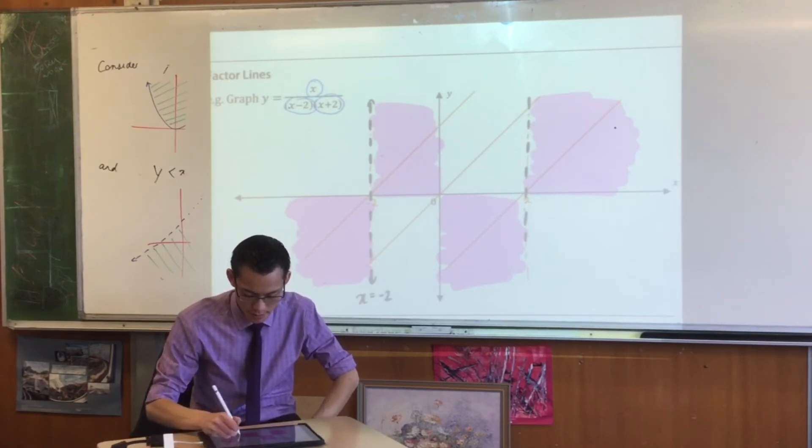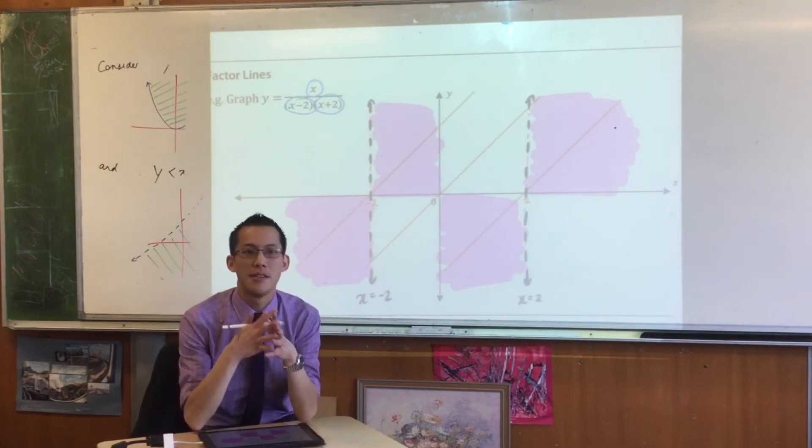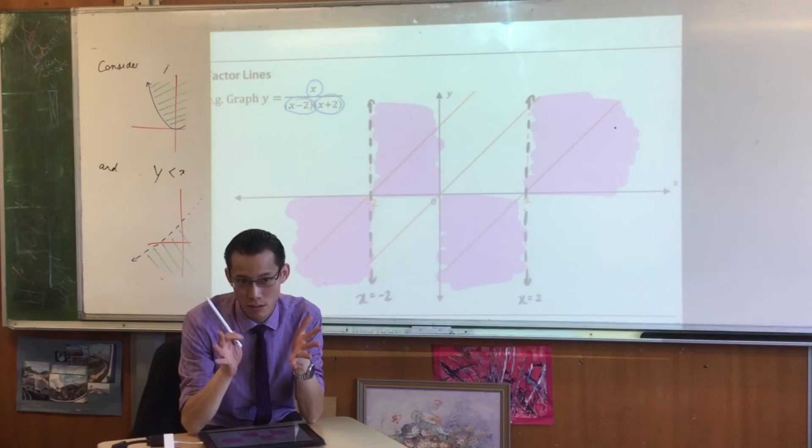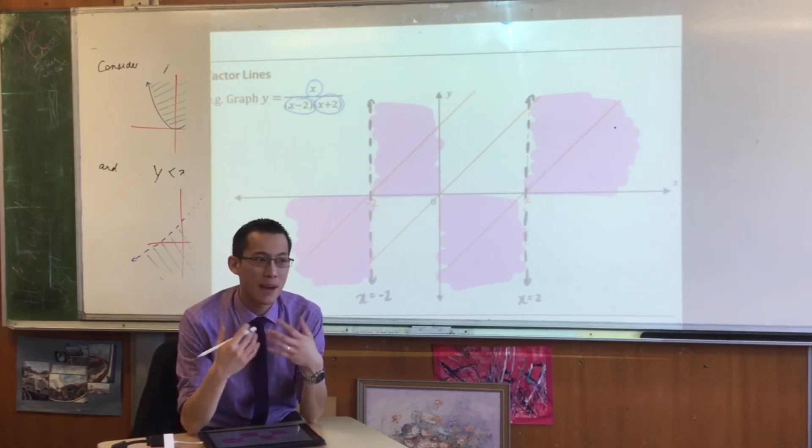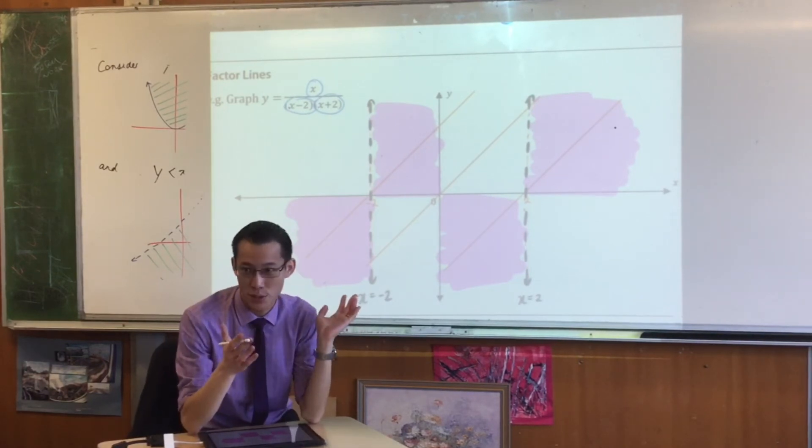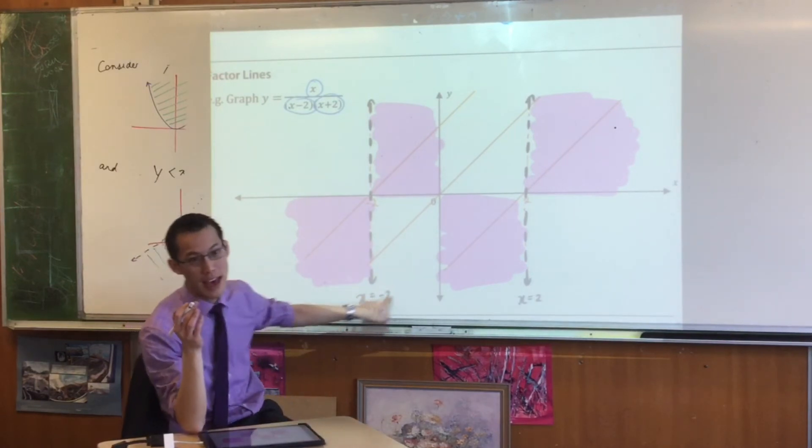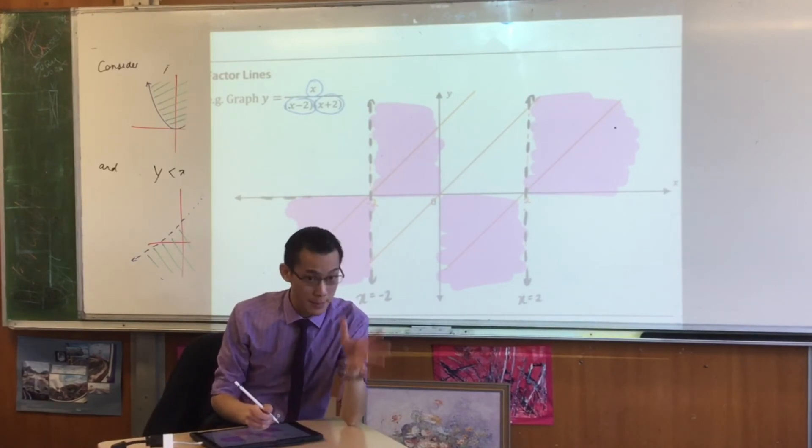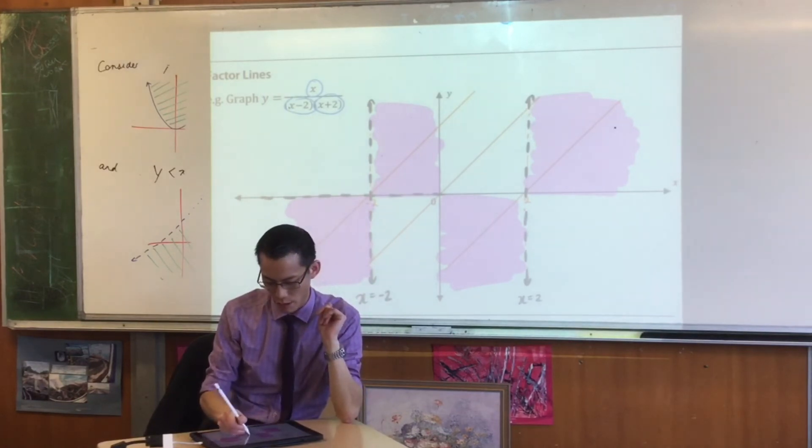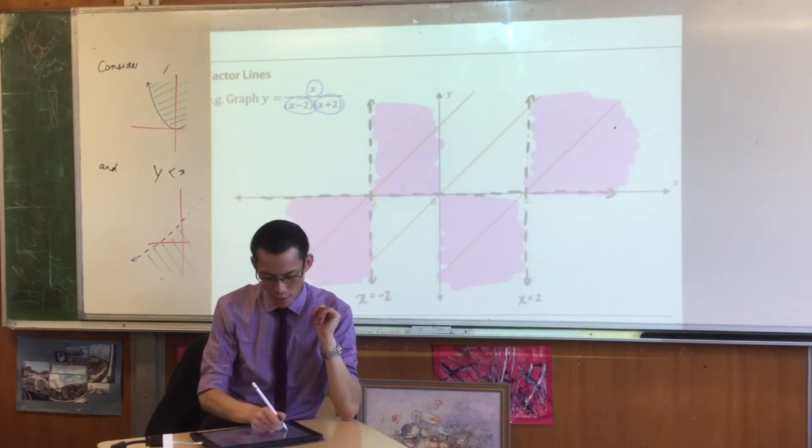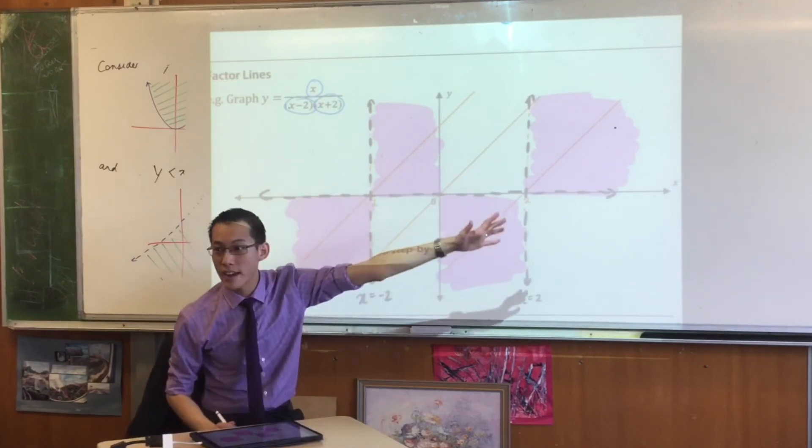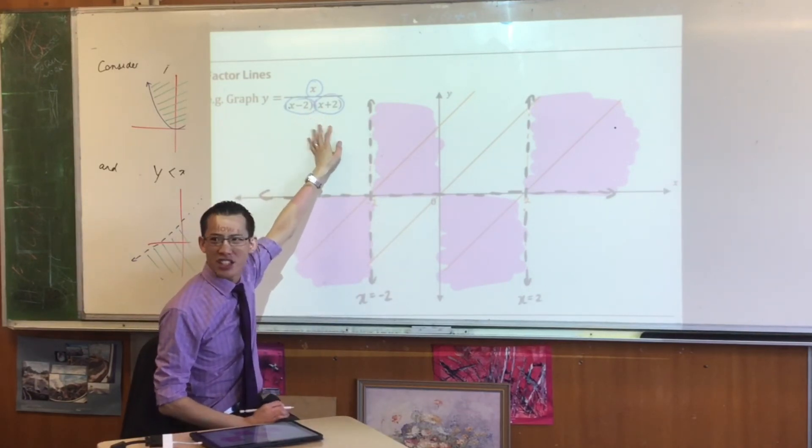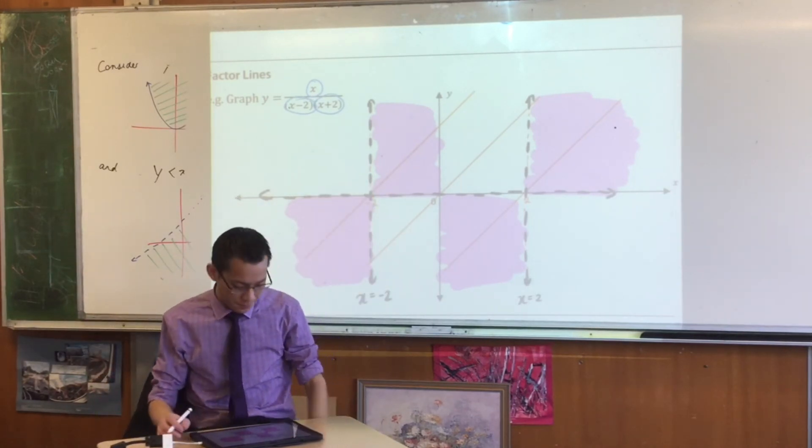There's also a horizontal asymptote. Can you help me work out what it is? Student: It's zero. Teacher: It's y equals zero, right? Asymptotes are lines, lines are equations. How do you know that? Limits. The horizontal asymptote comes from the behavior of your function as x approaches infinity and x approaches negative infinity. You're like, that's a denominator, it's getting massive, so you're going to get a very small number.